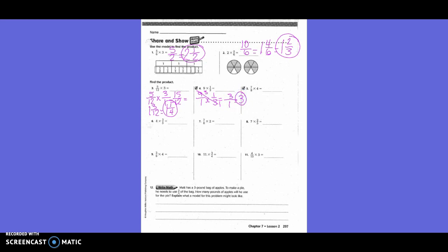Number five: can I simplify before I begin? Yes. I'm going to diagonally cross out my four and my eight — we go diagonally, not vertically, because multiplying is across. What goes into both four and eight? Four. Four goes into four once, and four goes into eight twice. Seven times one equals seven, and two times one equals two. So seven over two equals three and one-half.